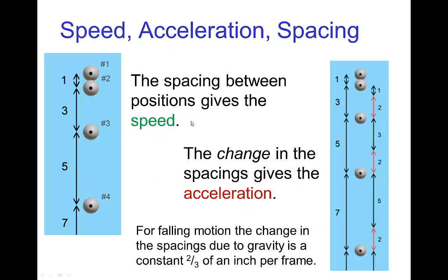Another more animation-related example is when we think about spacing. For a falling object, the spacing is larger and larger because the object is gaining speed, so we know there's a direct connection between spacing and speed. On the other hand, the change in the spacings is what we refer to as acceleration. Because speed is indicated by spacing, the change in speed — which is the acceleration — is indicated by the change in spacings. For falling motion, that change happens to be a constant two-thirds of an inch per frame, so the spacing gets longer by two-thirds of an inch with each frame.